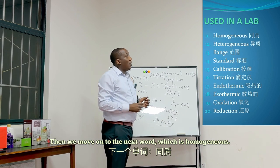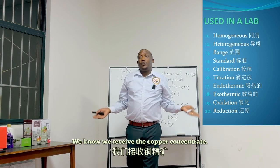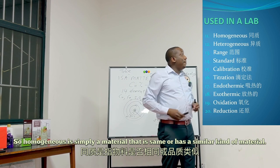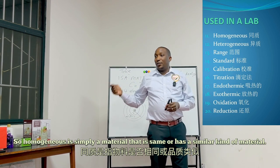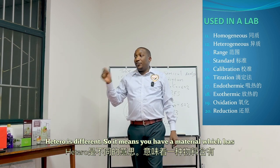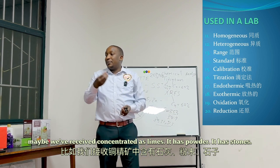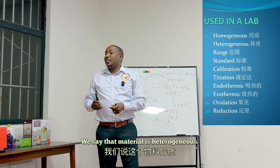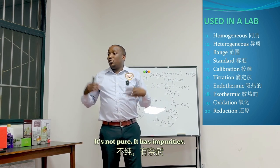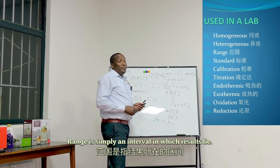The next word is homogeneous. 'Homo' means same, so we use it for material. When we receive copper concentrate, we ask: is it homogeneous — is it the same? Homogeneous means a material that is the same or has a similar kind throughout. The opposite is heterogeneous — 'hetero' means different. If you've received concentrate as lumps, powder, and stones, that material is heterogeneous: it's not the same, it's different, it has impurities.